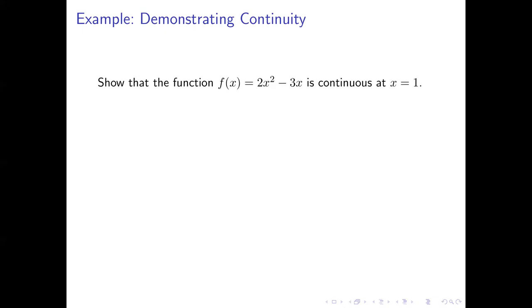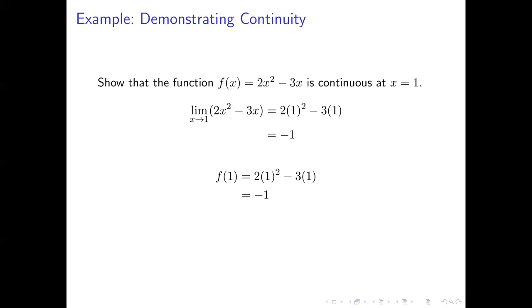Let's look at an example to see how we can demonstrate that a function is continuous. Let's take the function defined by 2x squared minus 3x. We'll show that this function is continuous at the point where x equals 1. We start by considering the limit as x approaches 1 of the function. This is a limit we can find by substitution because the function is a polynomial, so substituting 1 for x gives negative 1. Now, f of 1 also equals negative 1. Since the limit as x approaches 1 equals f of 1, our function f is continuous at x equals 1.